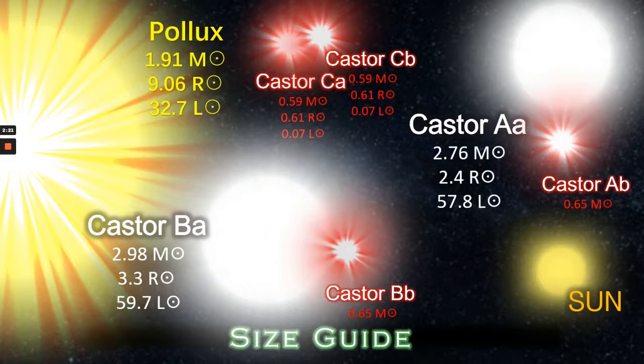Finally of course Pollux. Pollux is a K-class giant and at 9.06 solar radii its luminosity is about 37 suns, while its mass is just slightly under 2 solar masses.